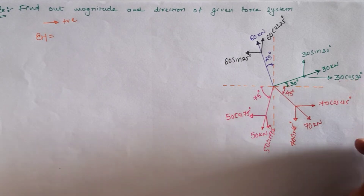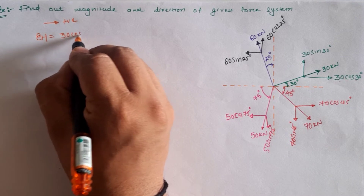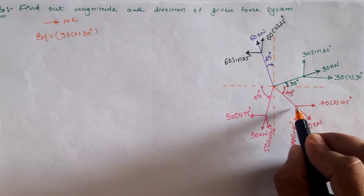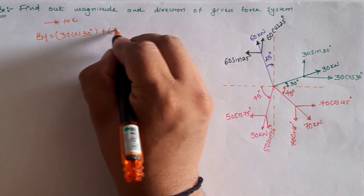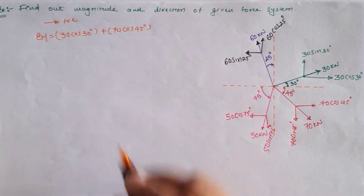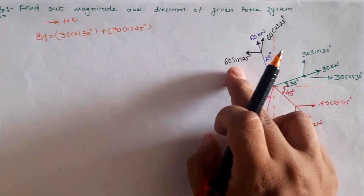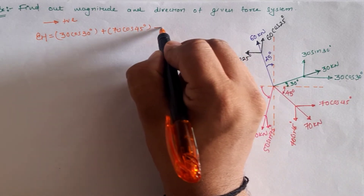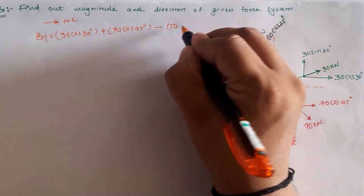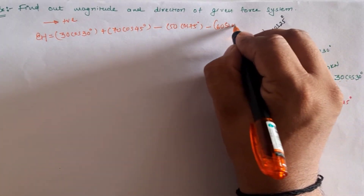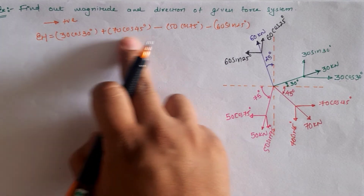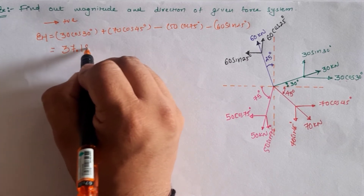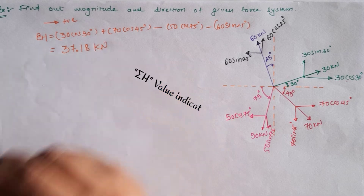The component 30 cos 30 is in the positive x-direction, so it is positive. 70 cos 45 is also in the positive direction. However, 50 cos 75 and 60 sin 25 are in the negative x-direction, so they are negative. Summing all these values, sigma H equals 37.18 kilonewtons.